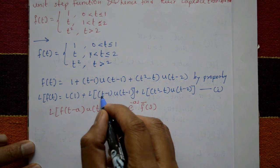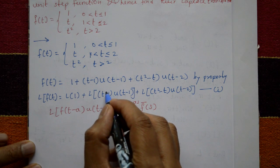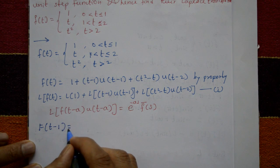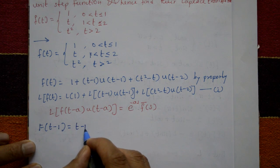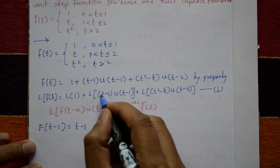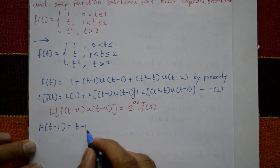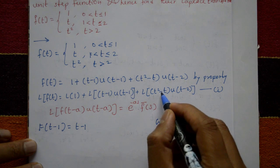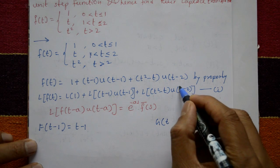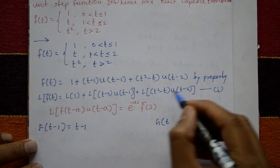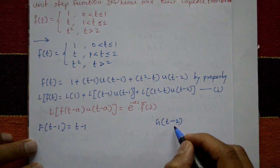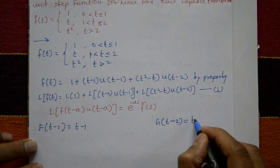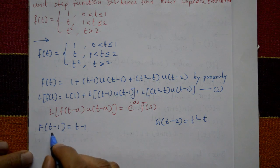For the second term, the expression f(t − a) is (t − 1), so f(t) = t and a = 1. For the third term, let g(t − 2) = t² − t, so we need to find g(t). Substituting t → t + 2, we get g(t) with t replaced by t + 2, equal to t² − t.